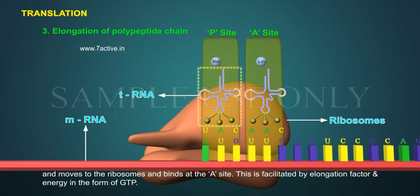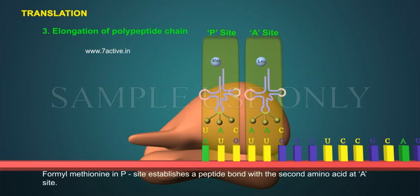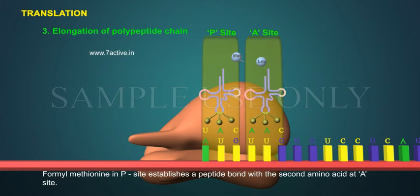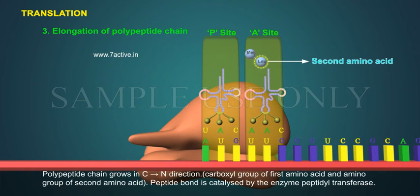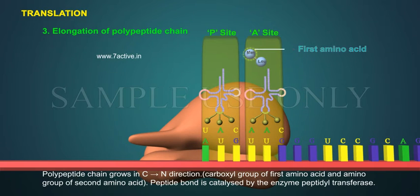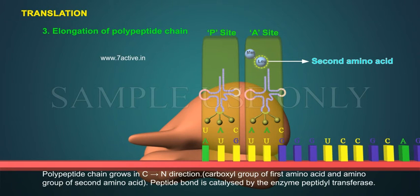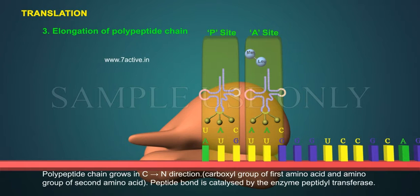This is facilitated by elongation factor and energy in the form of GTP. Formyl methionine in the P site establishes a peptide bond with the second amino acid at the A site. The polypeptide chain grows via the carboxyl group of the first amino acid and the amino group of the second amino acid. The peptide bond is catalyzed by the enzyme peptidyl transferase.